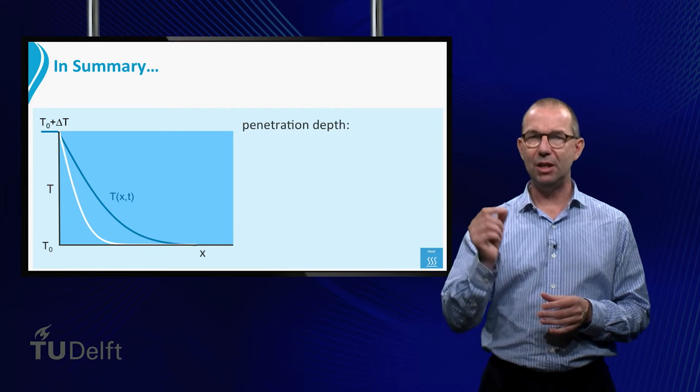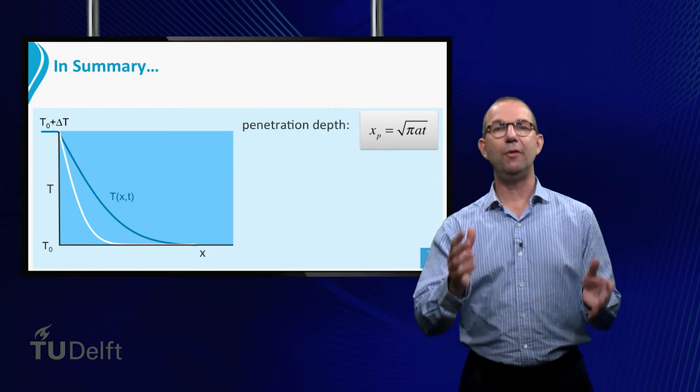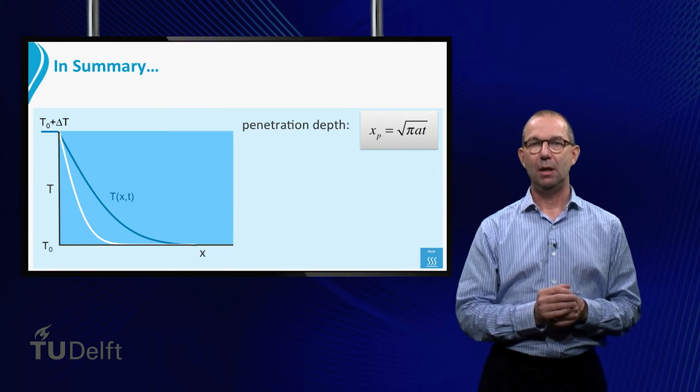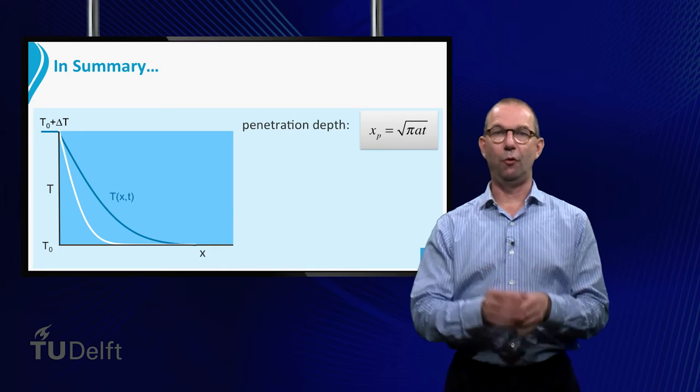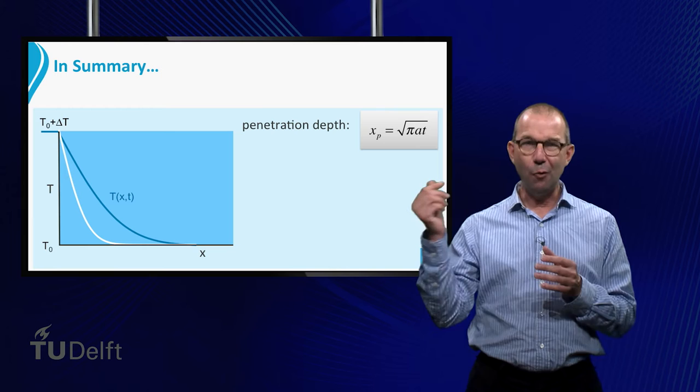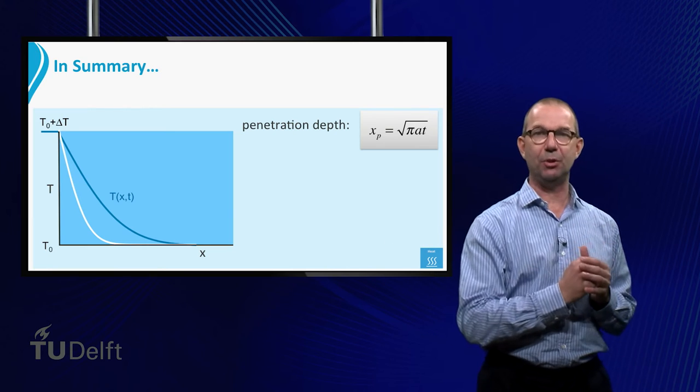How far has the heat penetrated into the plate? That is given by what is called the penetration depth. It is given by the square root of pi times A times T. It tells us how far into the plate roughly the temperature has changed.